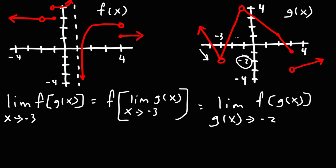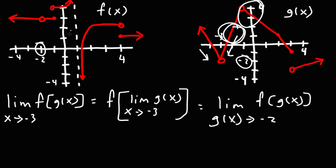And as we approach negative 3 from the right side, g is approaching negative 2 from above negative 2 as well. As g approaches negative 2 from above in this graph, it's equivalent to f approaching negative 2 from the right side. So you need to translate the word 'above' in the g function with the word 'from the right' in the function for f, because the y value for this function will become the x value for this function, since g is inside of f.